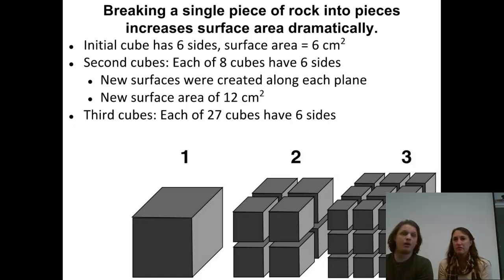Surface area is important because chemical weathering really can only happen on the surface. It can't happen from the inside out. It happens at the surface. And if we think back to mechanical weathering, actually breaking the material apart, or rocks apart, into smaller pieces, we're actually going to increase the surface area.